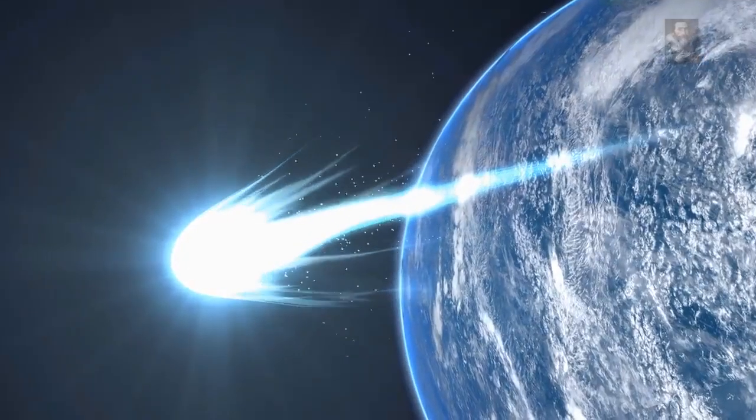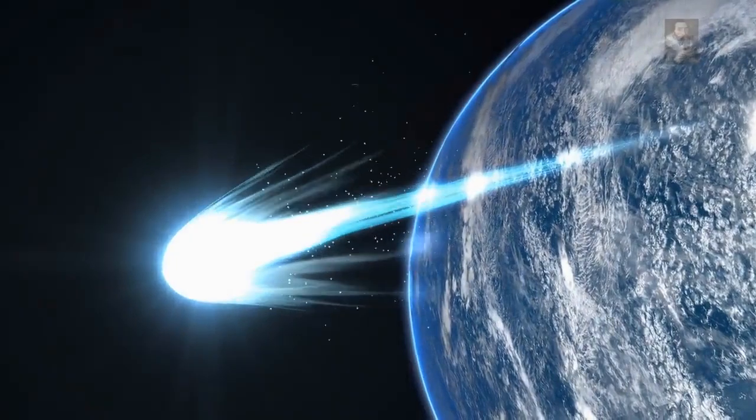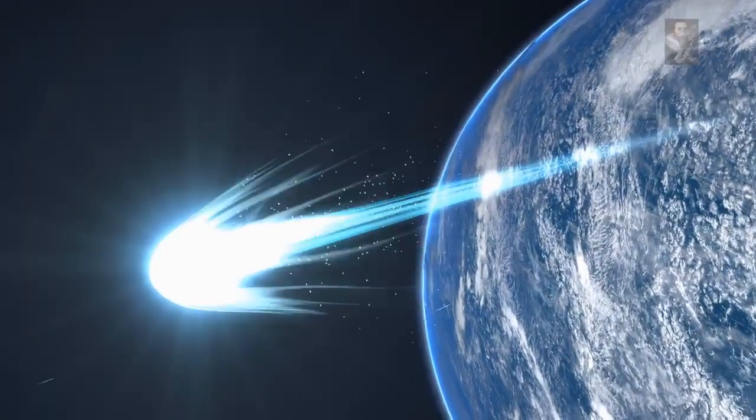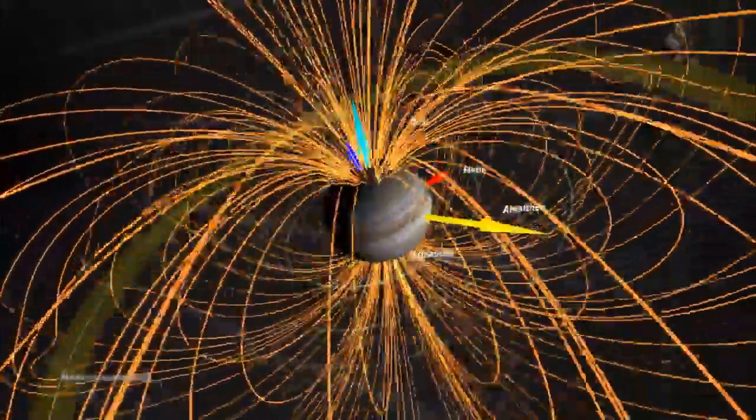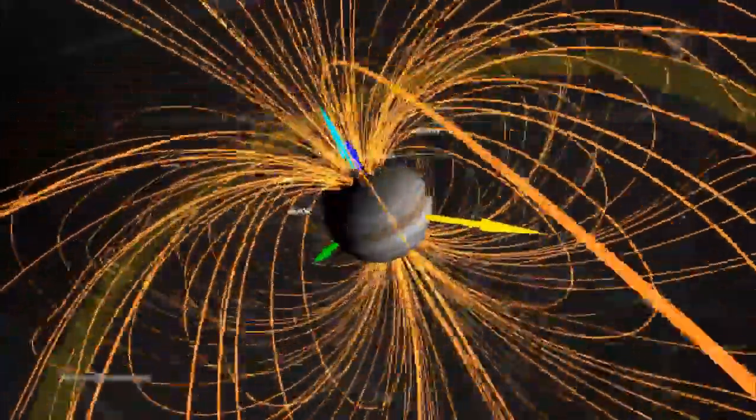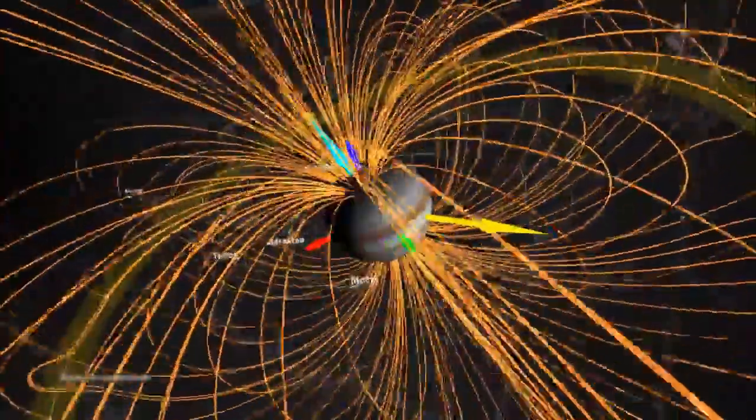Long period comets are thought to strike Earth only on very long timescales of millions or tens of millions of years. Without Jupiter nearby, long period comets would collide with our planet much more frequently.